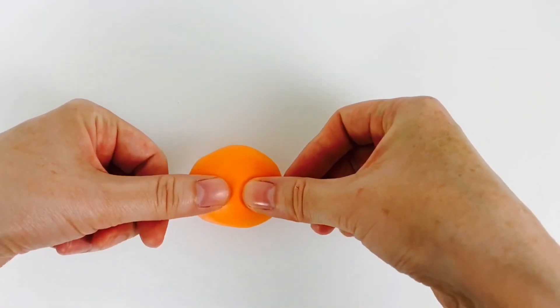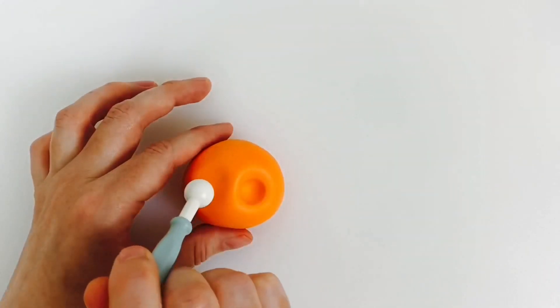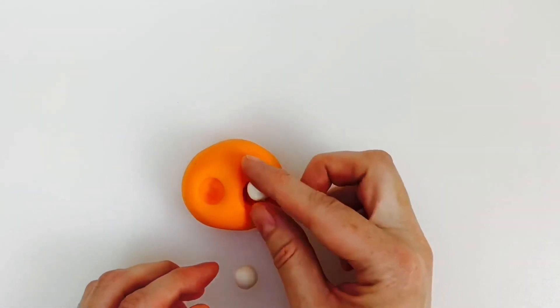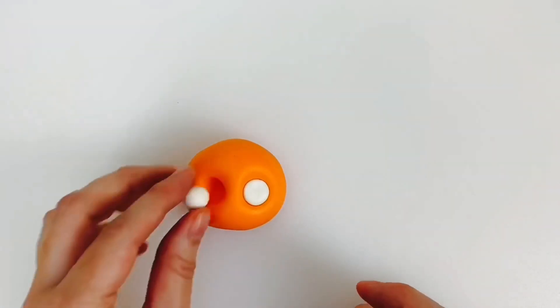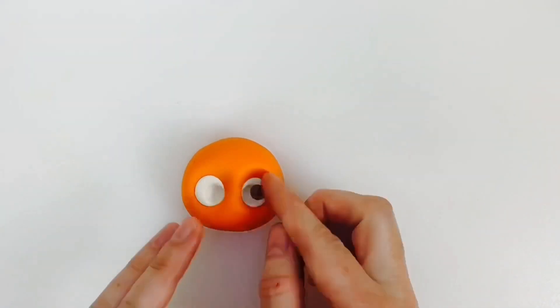For the head you'll need 50 grams of orange modeling paste rolled into a ball. Push your thumbs into the paste and then use the large ball tool to create two deep wells. Fill the wells with two balls of white modeling paste and then use a smaller ball tool to create two further wells.